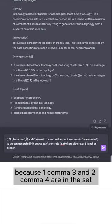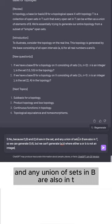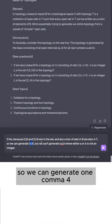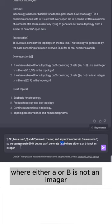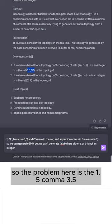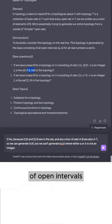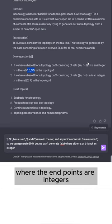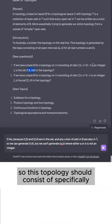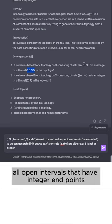So the answer is no because (1,3) and (2,4) are in the set and any union of sets in B are also in T. So we can generate (1,4), but we can't generate (A,B) where either A or B is not an integer. So the problem here is the 1.5, 3.5. There's no way to get this using a union of open intervals where the endpoints are integers.